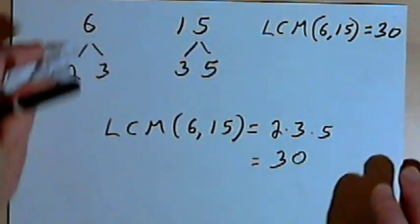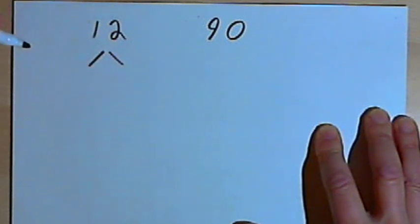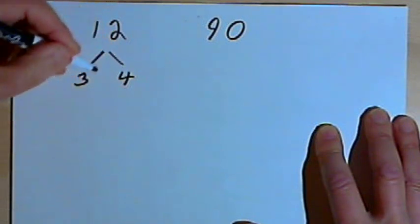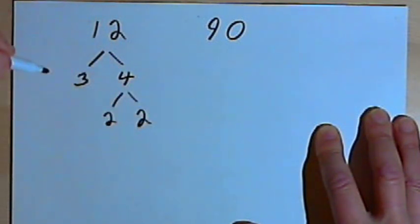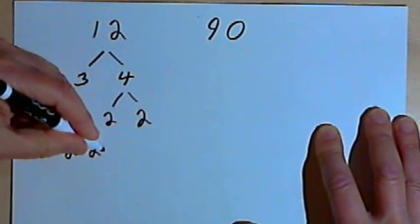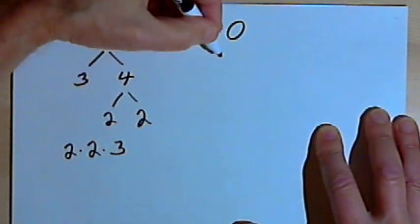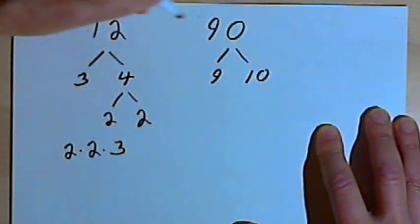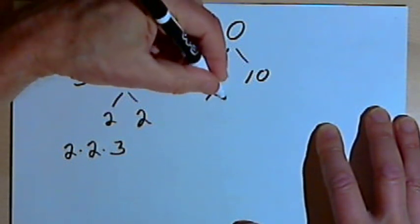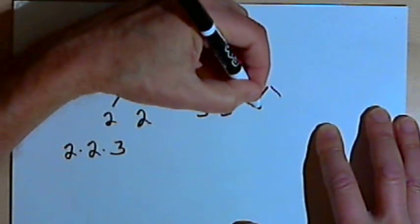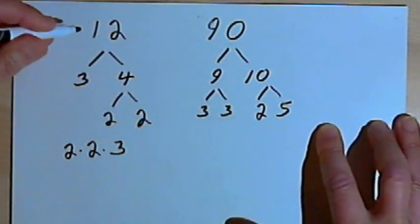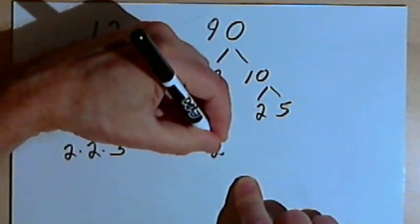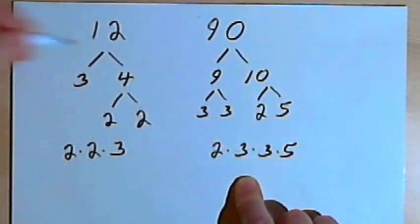Let's do another one. I want to do 12 and 90. So I want the least common multiple of 12 and 90. Factor 12 down into its prime factorization. 12 is 3 times 4, and 4 is 2 times 2, so 12 is 2 times 2 times 3. And 90 — I'll factor that down into 9 times 10. 9 is a composite, that's 3 times 3. 10 is also a composite, that's 2 times 5. So my prime factorization for 90 would be 2 times 3 times 3 times 5.